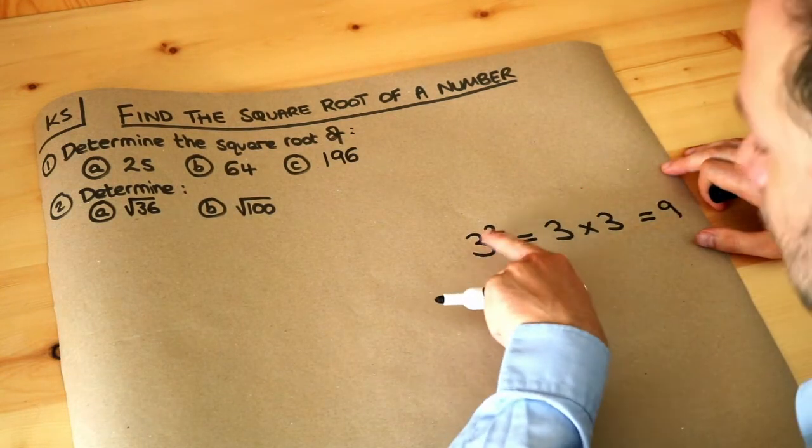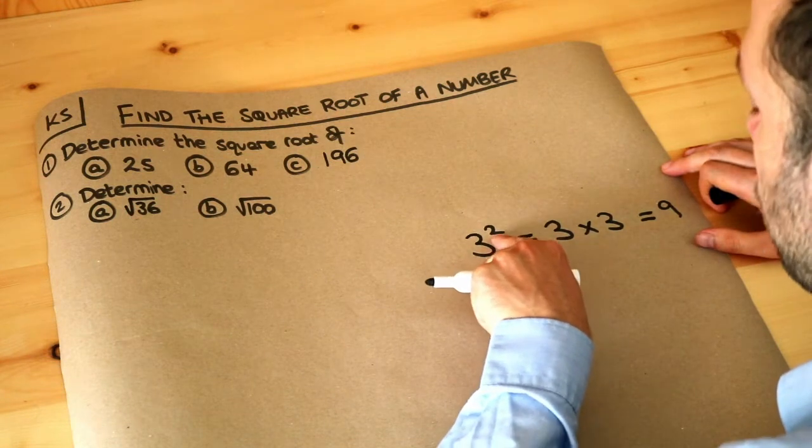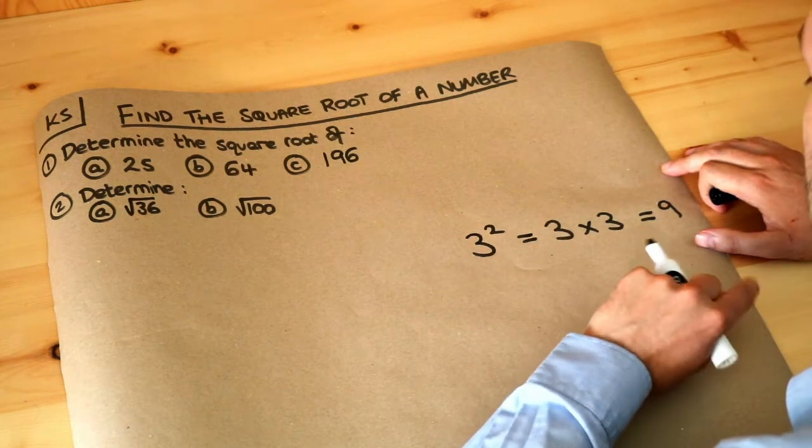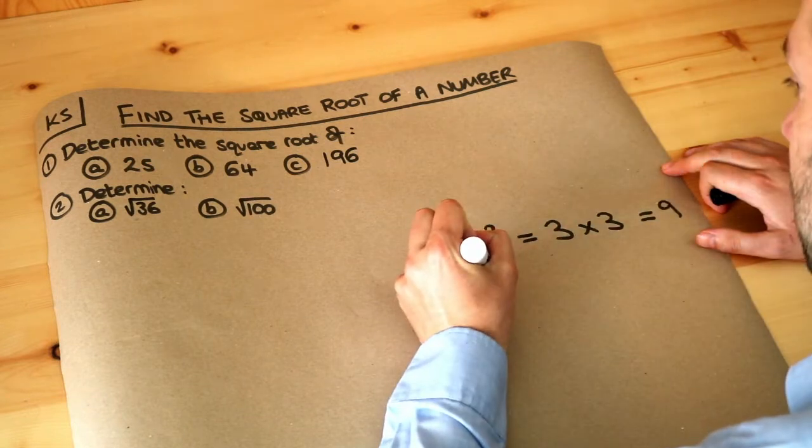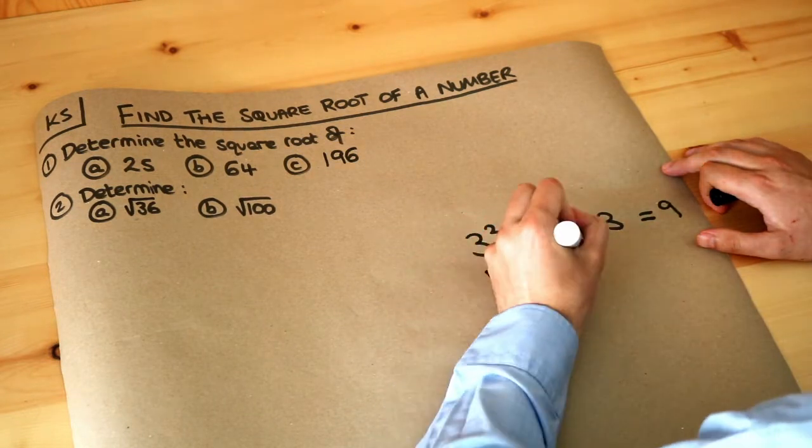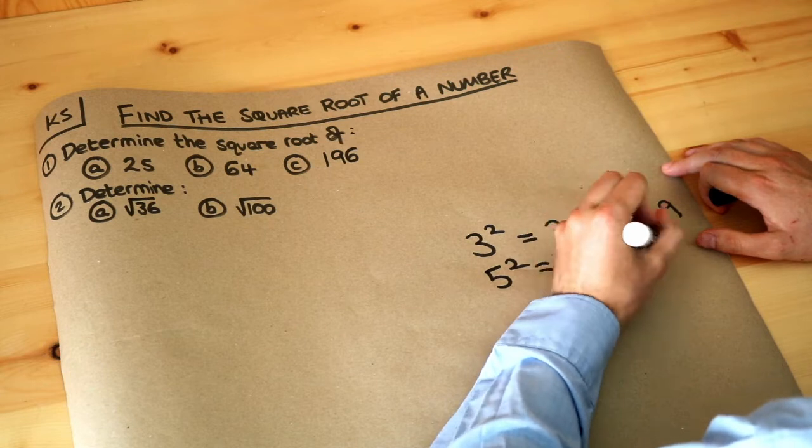So 3 with a little 2, that doesn't mean 3 times 2, it's not 6. 3 squared means 3 times by itself. And then we had 5 squared for example, that would be 5 times 5 and that would be 25.